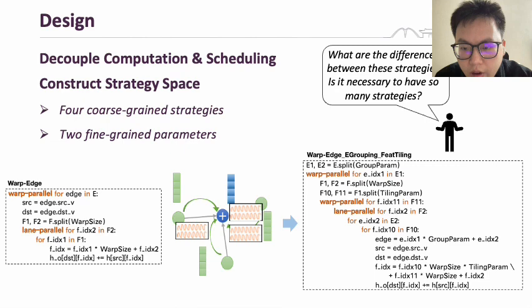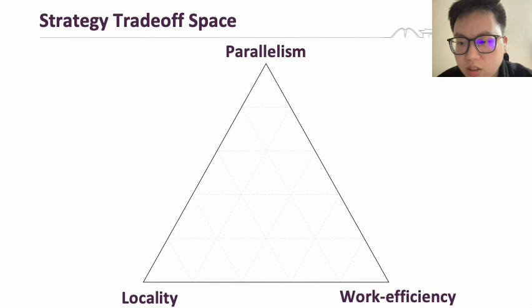However, a valid question arises: what are the differences between these strategies, and is it necessary to have so many different execution strategies? We further explore the impact of different strategies by analyzing the strategy trade-off space. We focus on the well-understood three-dimensional optimization space: parallelism, locality, and work efficiency.